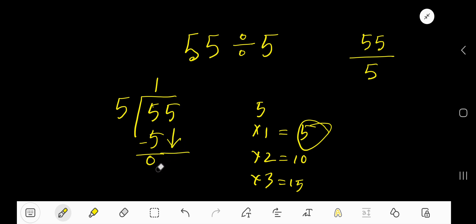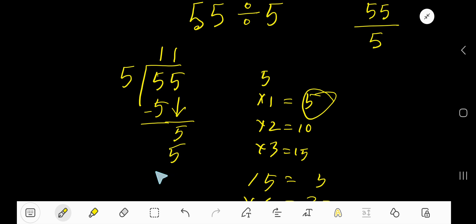Bring down this 5. 5 goes into 5 how many times? 1 time. Write 1. 1 times 5 is 5. If you subtract, you will get 0. That is, we are getting 11. Yes. This is the answer.